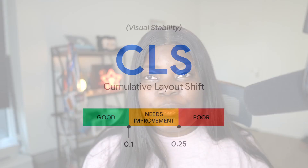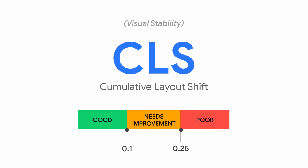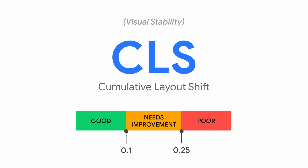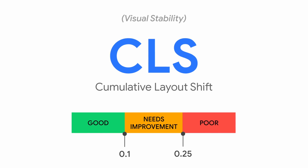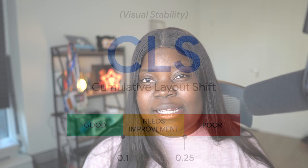Cumulative Layout Shift measures the visual stability of a web page. According to Google, a good Cumulative Layout Shift measurement is equal to or less than 0.1. A layout shift can happen when a page jumps up and down or moves in different directions from where the content actually appeared in the first place.